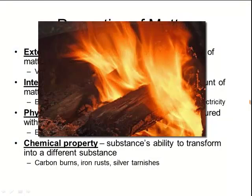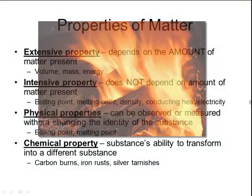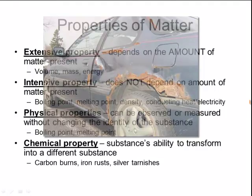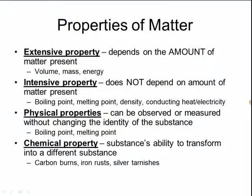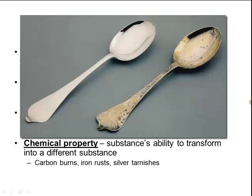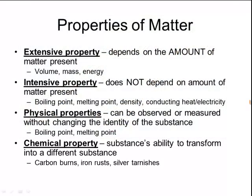When carbon burns, it changes into a different substance. When iron rusts, it changes into a different substance. Same thing with silver — when it tarnishes, it becomes something different. All of those properties describe the ability to transform into something different, and those are chemical properties.